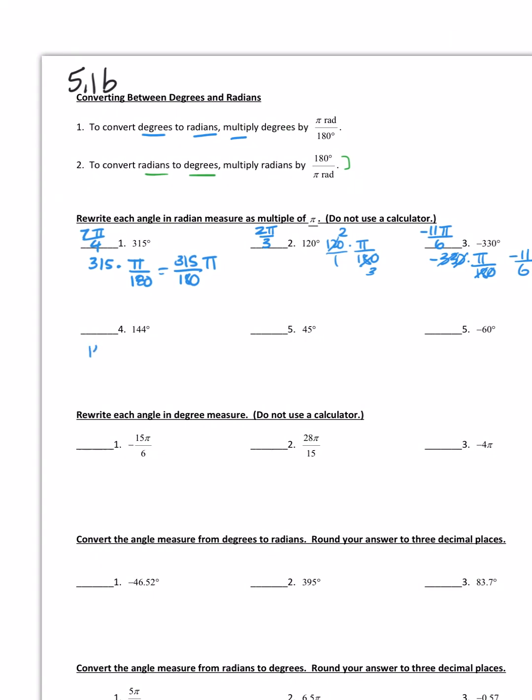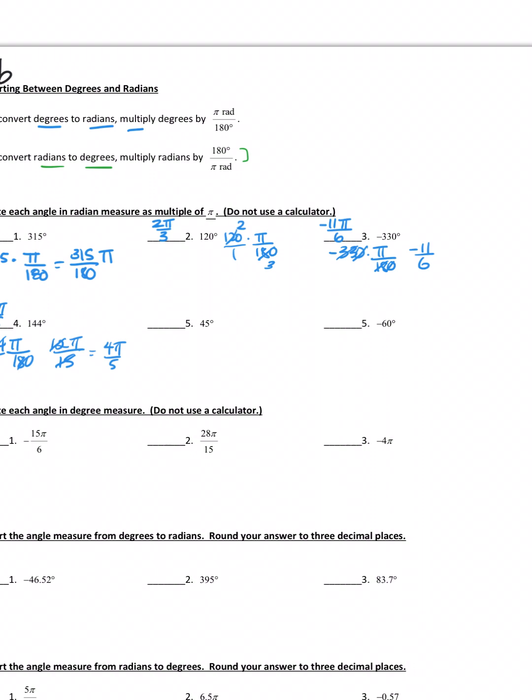144. Both of these are divisible by 12, so it's 12π over 15. I can keep reducing by 3, which gives me 4π over 5. And there's my answer.